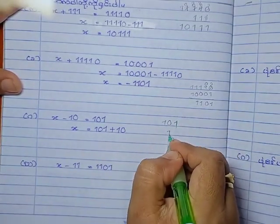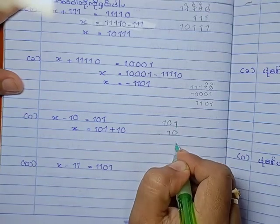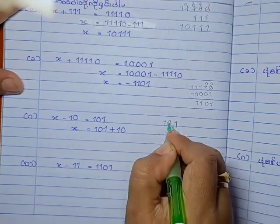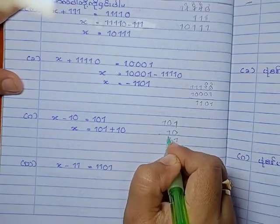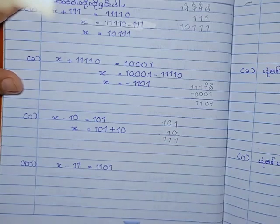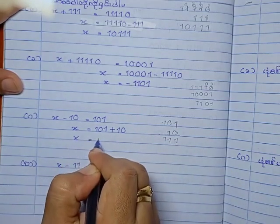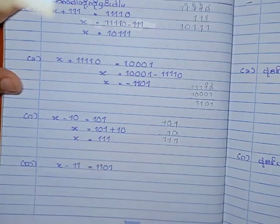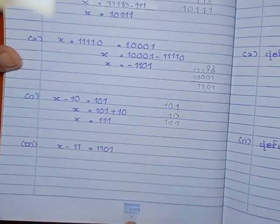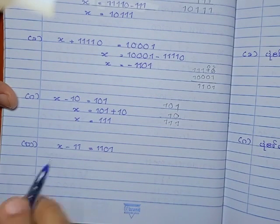10, 10, 10, 10. 111. 10, 10, 10. So, you can find H minus 1, 1, equal to 1, 1, 0, 1.